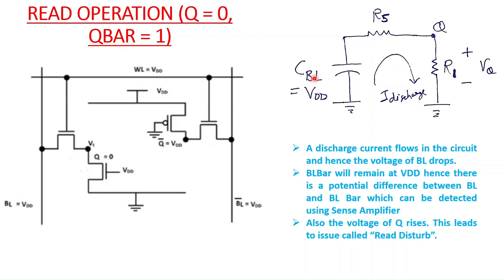The bit line capacitance CBL is charged to VDD through the pre-charge circuit. M5 is modeled as a resistance R5, and M1 transistor, which is also on, is modeled as resistance R1. We have an RC-type circuit where CBL is charged to VDD and connected through R5 and R1 to ground. A discharge current will flow from CBL through R1, so the voltage of the bit line will drop due to this discharge current.